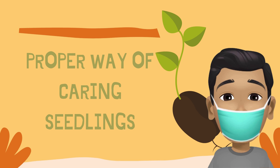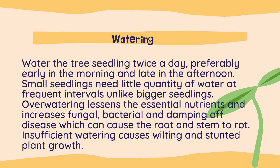After knowing the sources of fruit bearing trees, we also need to know the proper way of caring for seedlings. Number one is watering. Water the tree seedlings twice a day, preferably early in the morning and late in the afternoon. Small seedlings need little quantities of water at frequent intervals, unlike bigger seedlings. Over-watering lessens essential nutrients and increases fungal, bacterial, and damping-off disease, which can cause the root and stem to rot.